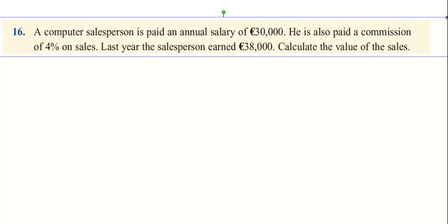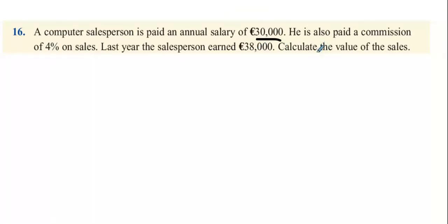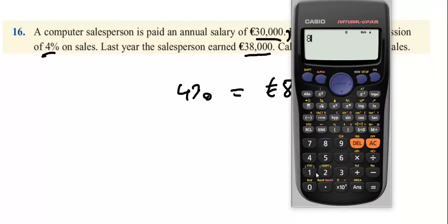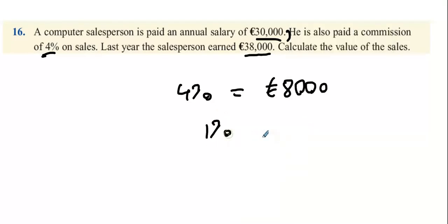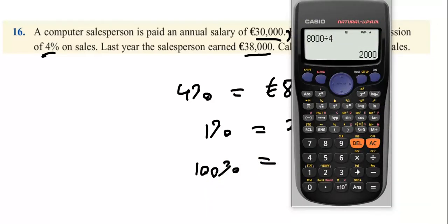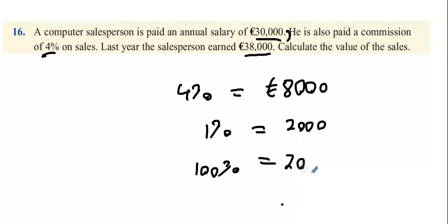Question 16: A computer salesman has an annual salary of €30,000. He's also paid 4% commission on sales. Last year he earned €38,000. Calculate the value of sales. He earned €8,000 more than usual, so his bonus is 4% of his sales. €8,000 divided by 4 to find 1% is €2,000, multiply by 100 to get €200,000 in sales.